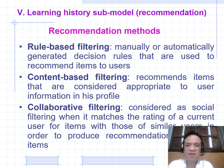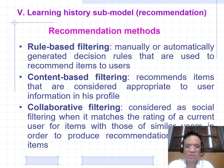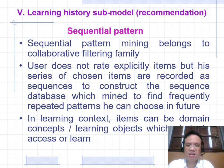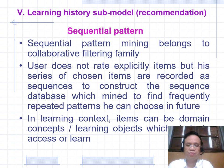Recommendation methods include: manually or automatically generated decision groups used to recommend items to users. Content-based filtering recommends items appropriate to the user's profile. Collaborative filtering considers social filtering by matching the ratings of a current user for items with ratings of similar users to produce recommendations for new items. Usage-based filtering belongs to the co-operability filtering family — users do not rate items explicitly, but their series of chosen items are recorded as sequences to construct a sequence database to find frequently repeated patterns.